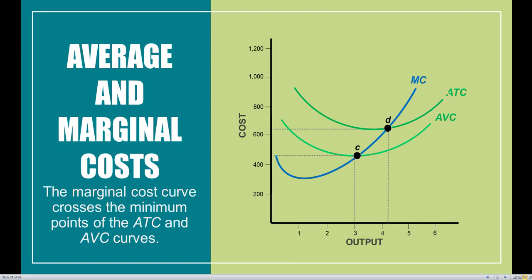These relationships between AVC, ATC, and MC are going to lead us to a lot of different business strategies when we look at different market structures: perfect competition, monopoly, monopolistic competition, and oligopoly. These curves are all going to come back in the next few chapters, so it would be a good idea to get the foundations down. Marginal cost intersects the minimum of each curve; we know where they fall and where they rise; and ATC is always above AVC with the distance between them equaling average fixed cost.